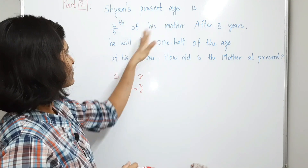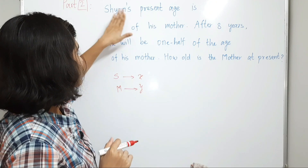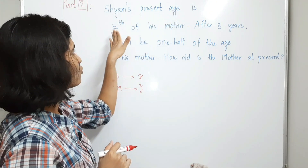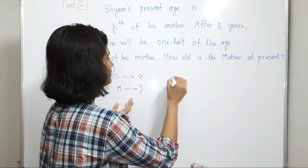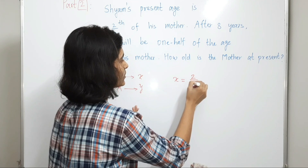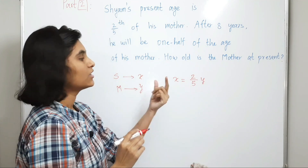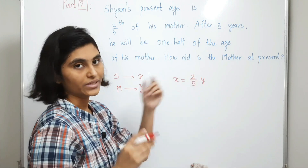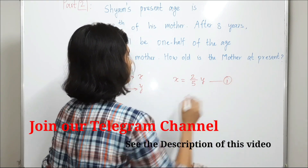Now let's frame the equation. Looking at the first condition: Shams' present age is two-fifths of his mother's. So X is equal to two-fifths of Y, that means X = (2/5)Y. This is our first equation.